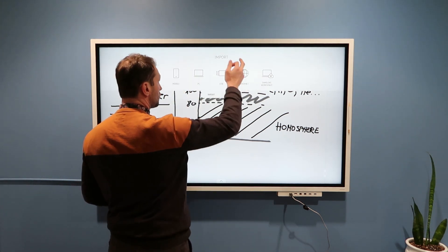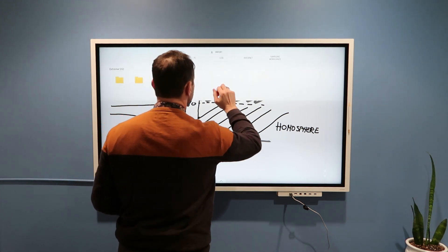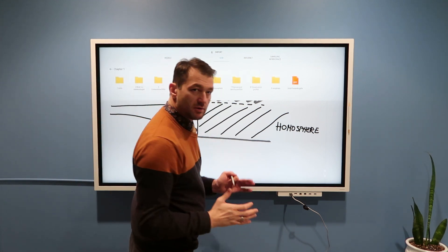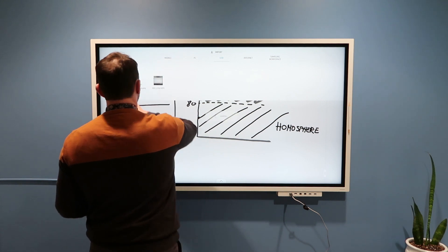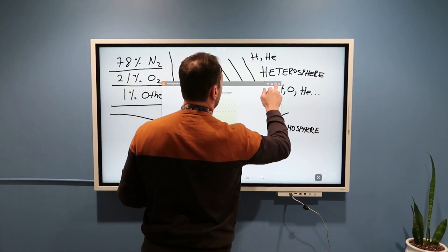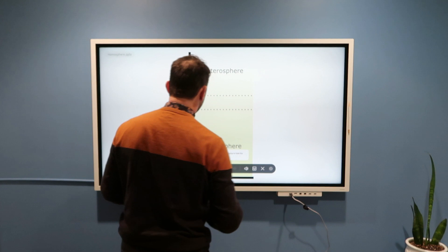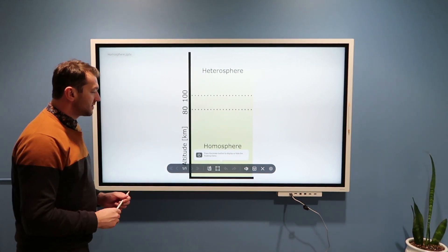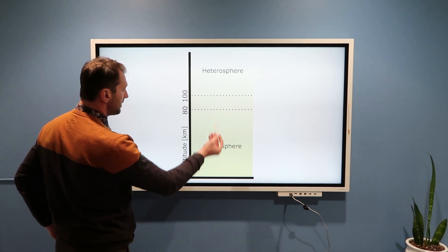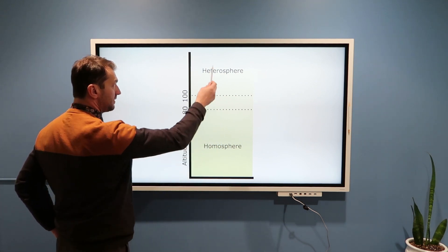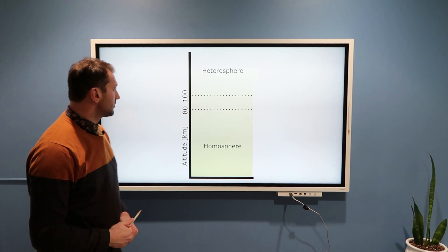I would like to show you a nicer picture of this if you want to crop it and have it as your study material. Here it is what we just discussed. Homosphere in the first 80 to 100 kilometers, after that is heterosphere.